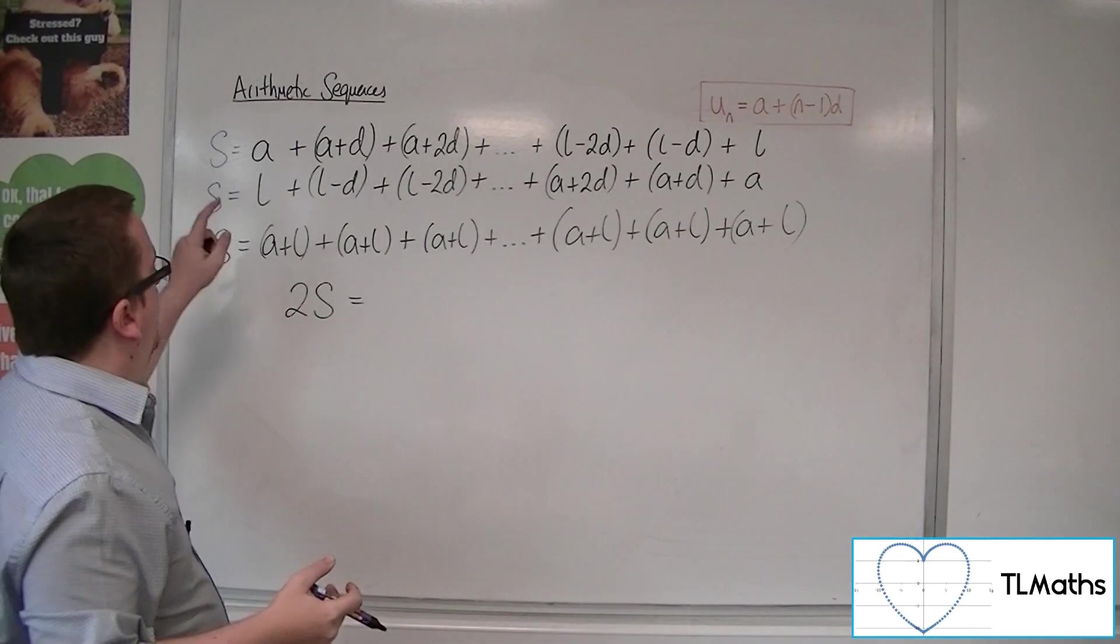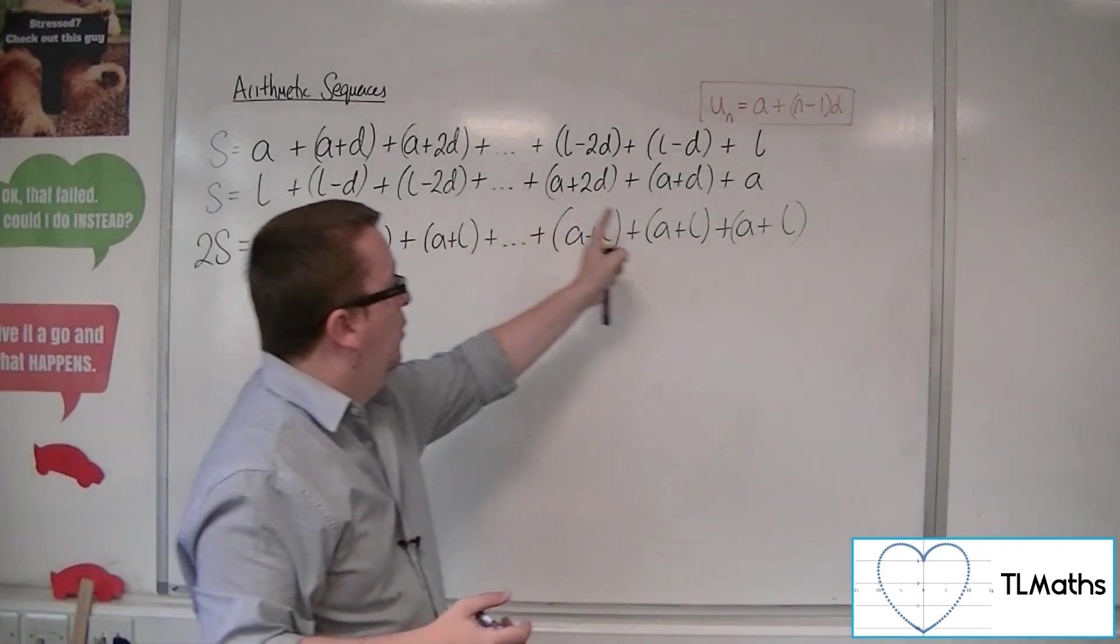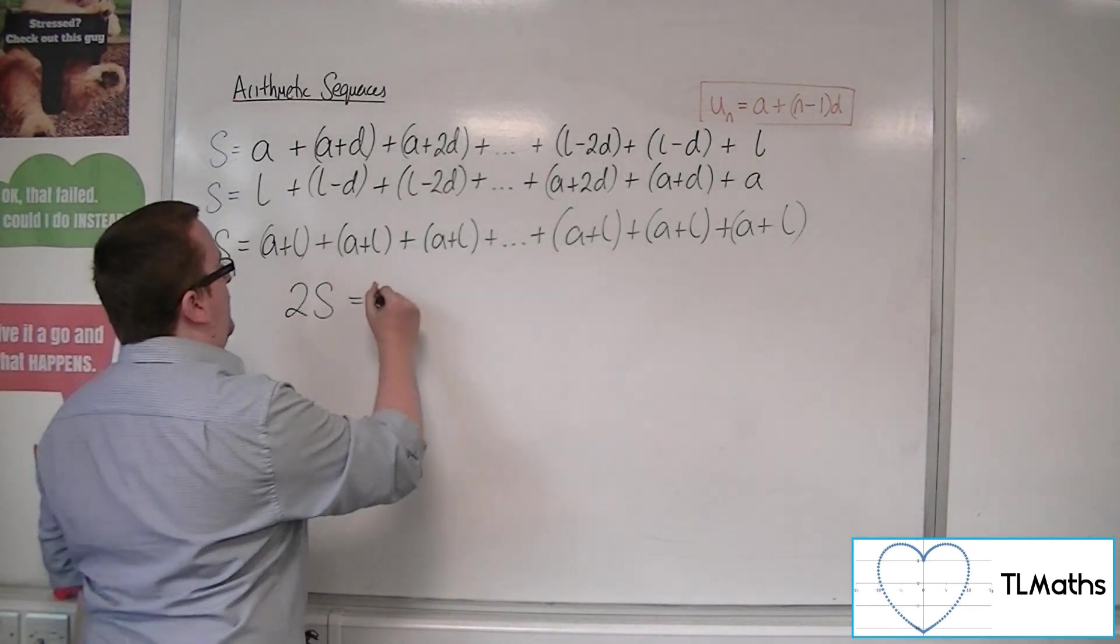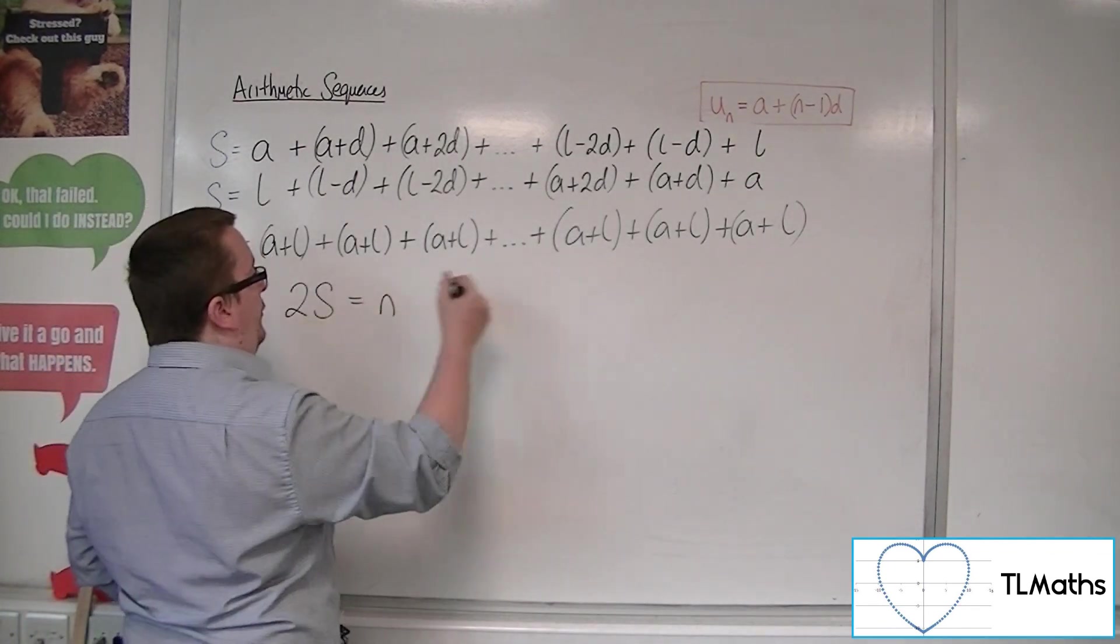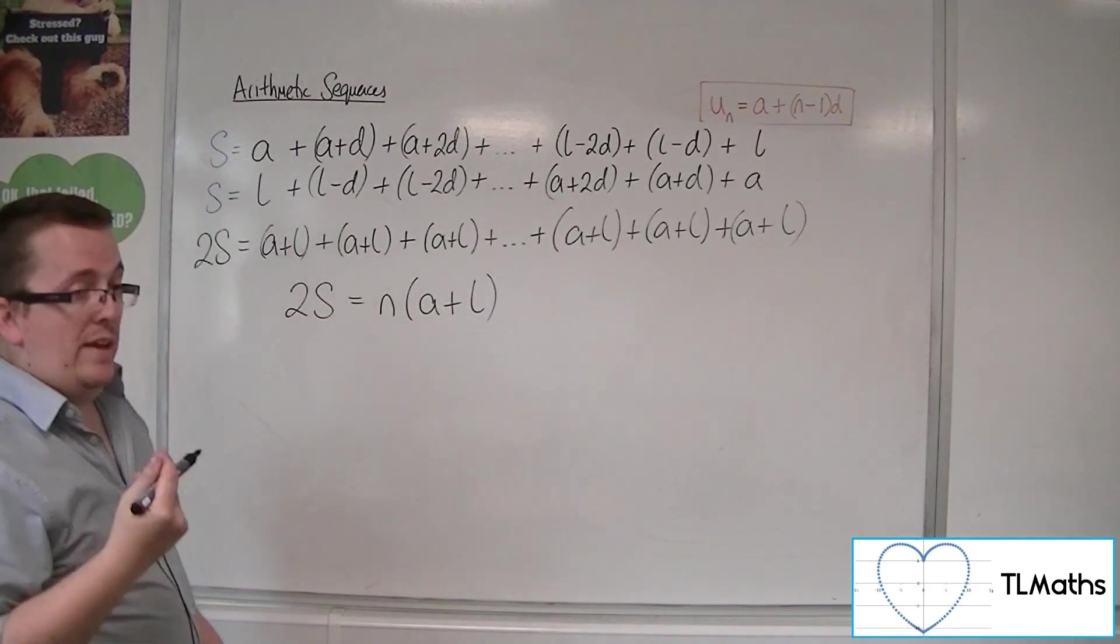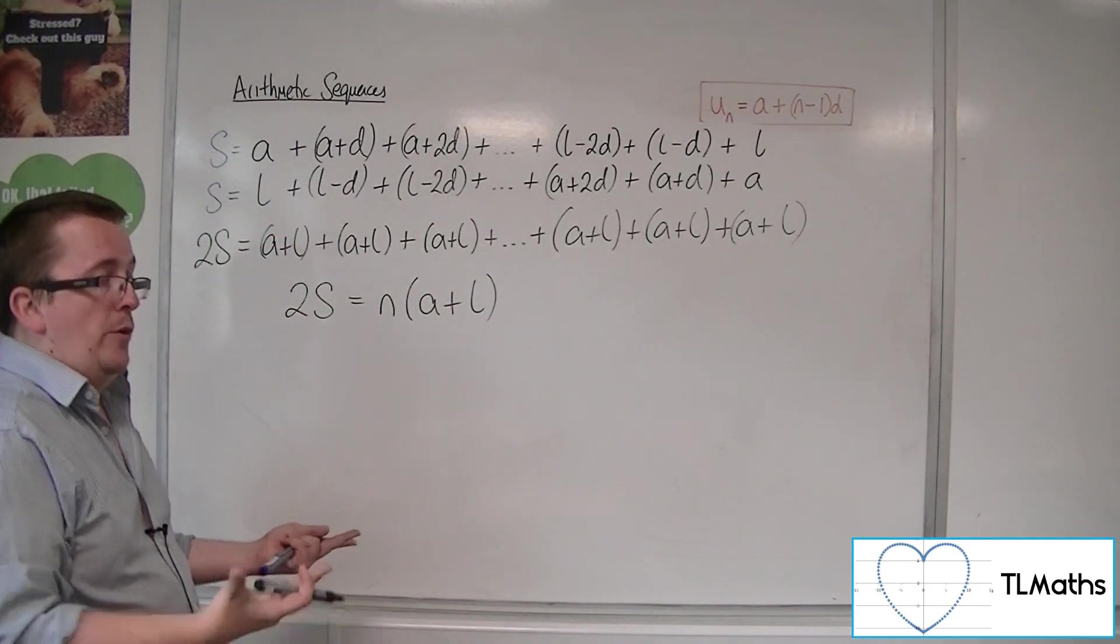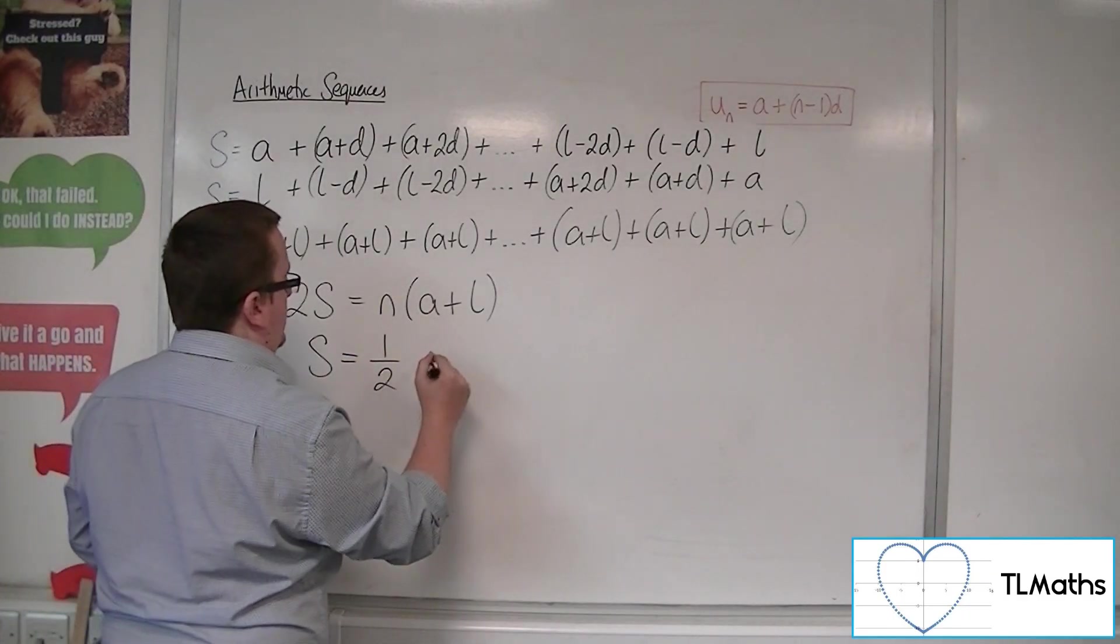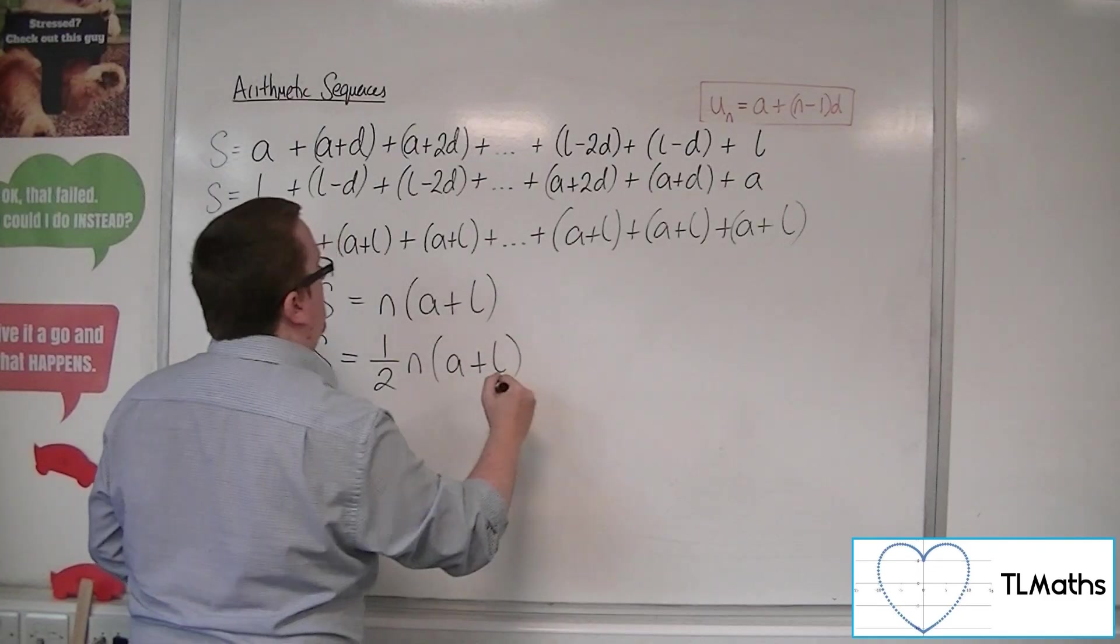Now how many do I actually have? Well, I've got 1, 2, 3, all the way up to my last term, which is n. So this would be n lots of a + l. And then you can divide both sides by 2, so that S is 1/2 n(a + l).